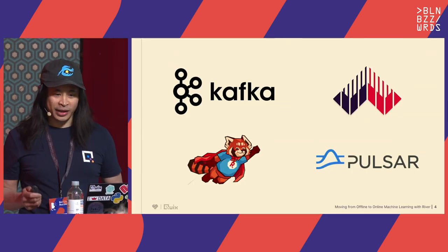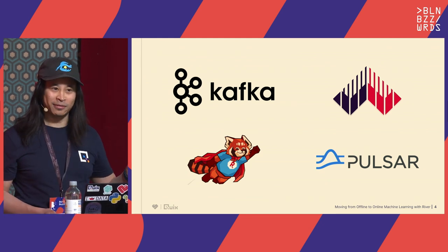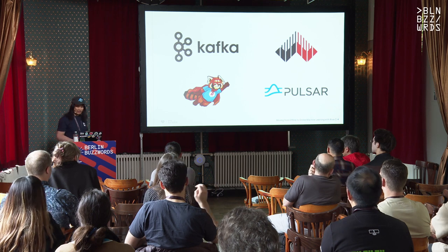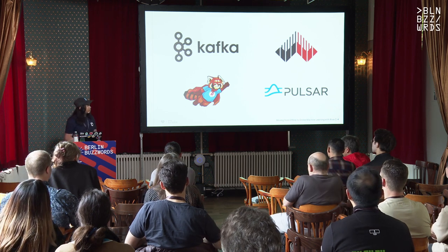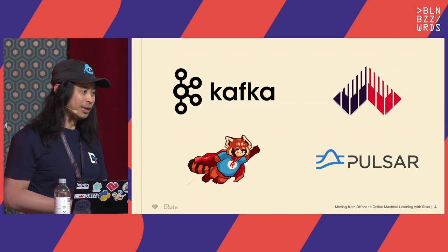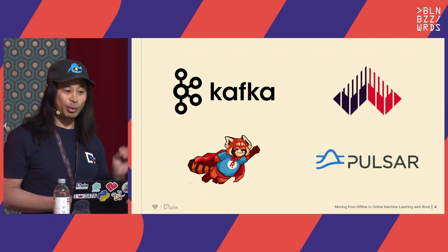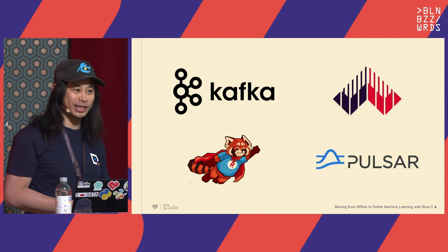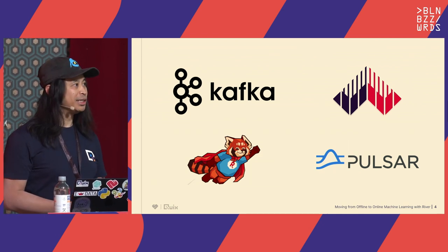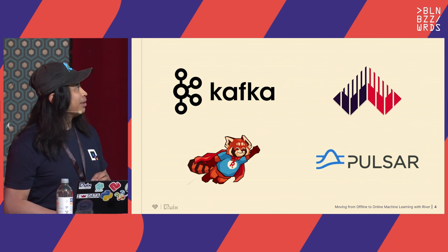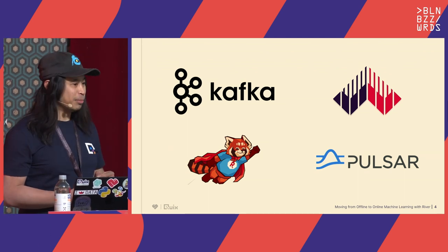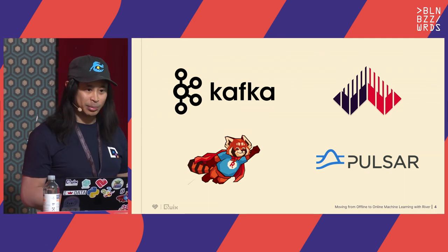To bring everyone on the same page, I'm going to go into a bit of background on stream processing. With real-time data, normally you have to put it somewhere. Traditionally you would put things into a database, but in the streaming data world you put it into a message broker. The really popular one that's been around for about 13 years is Apache Kafka, and close on its heels is Apache Pulsar.